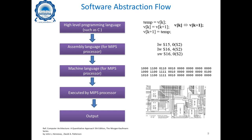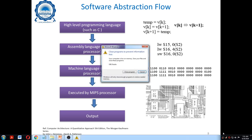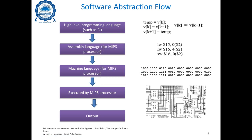From the software abstraction flow perspective, we start with a high-level programming language such as C. The C code is converted to assembly language for the MIPS processor, using assembly instructions with registers, offsets, and memory locations. That is then converted to machine language — machine code — which gets executed by the MIPS processor at the structural or hardware level to produce the output. That is the high-level abstraction flow.